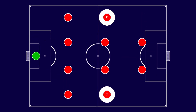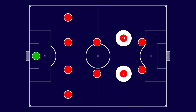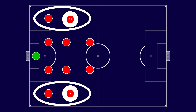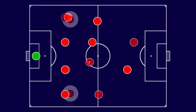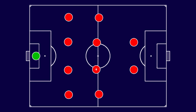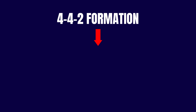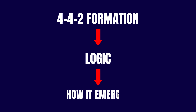Another example is the wingers, who can be players that move into the half spaces to create more space for the full-backs to overlap. Furthermore, they can also be players with a stronger defensive focus to double up on marking the wings along with the full-back when the team is defending. Nowadays it is also common to see defensive midfielders dropping between the center-backs when building up from the back. To understand the logic of the 4-4-2, we need to understand the context in which it emerged.